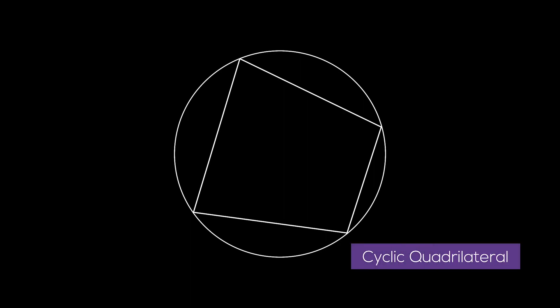Here, we have a circle. Let us draw a quadrilateral with all four of its vertices touching the circle. This is known as a cyclic quadrilateral.